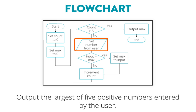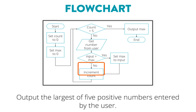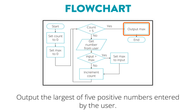Once the user has entered a number, the algorithm moves to another decision. If the user input is larger than the current max, move to the right, where we're instructed to replace the current max value with the user's input, and then proceed to increment count. If not, just proceed directly to increment count. The next step is to return to the count decision. This forms a loop, and the algorithm will continue getting numbers from the user and comparing them until it returns to this decision point a fifth time, and the count finally reaches five. At that point, we proceed to the right, output the max number we found, and the algorithm ends.